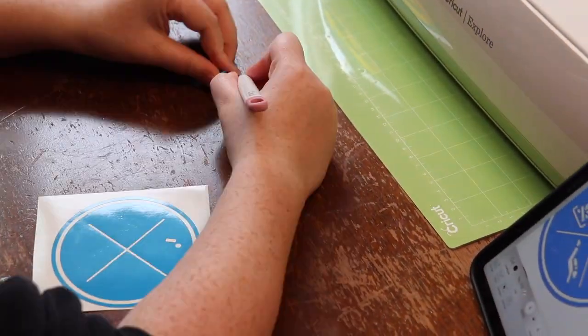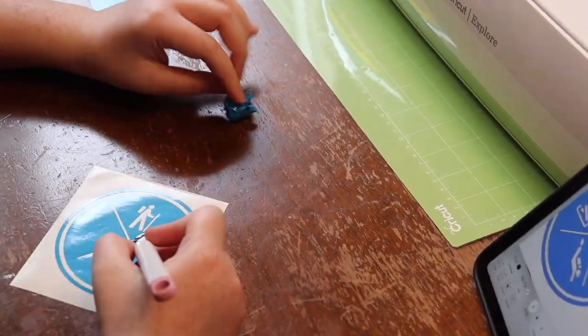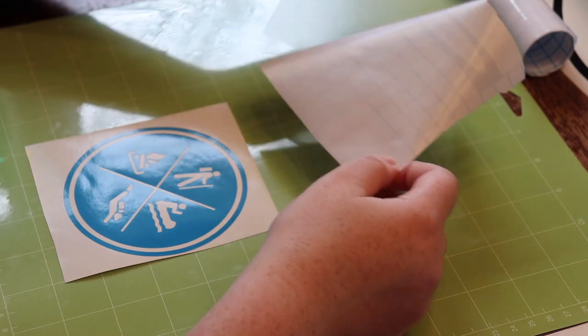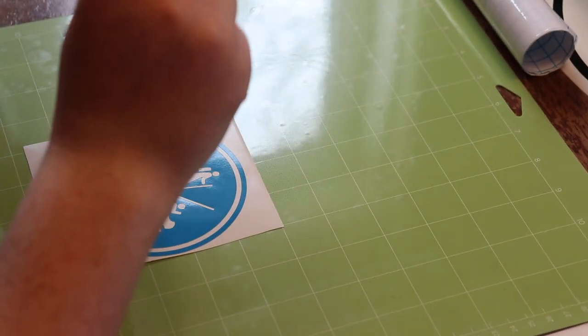This is making the paddle stickers and applying the transfer tape.